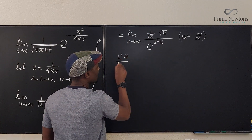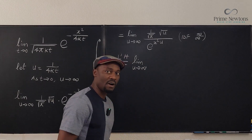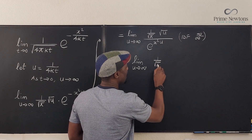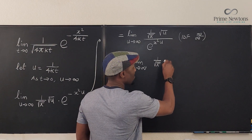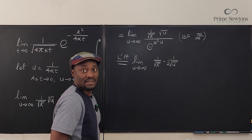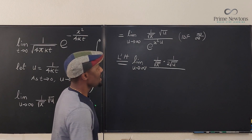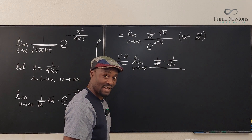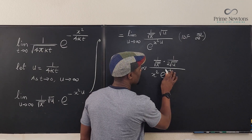By L'Hôpital's rule, we still have the limit as u goes to infinity. The constant one over the square root of π stays. The derivative of the square root of u is one over 2 times the square root of u. For the denominator, treating x squared as a constant, the derivative of e to the x squared u brings down x squared, giving x squared times e to the x squared u.